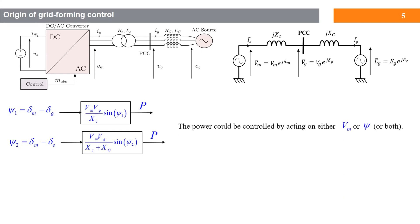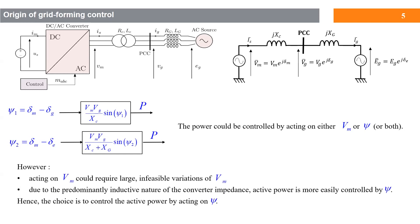To control the power we can act on the magnitude of the modulated voltage or on the angle, but in the transmission system acting on the voltage requires a large and infeasible variation of the magnitude. Therefore we are interested to control the active power only through the angle. So this is the origin of the grid forming control.